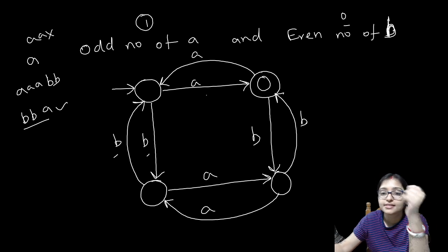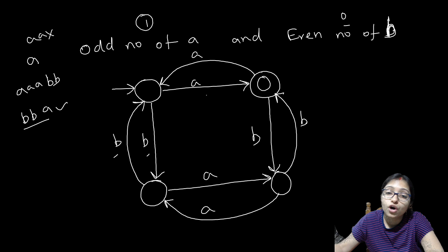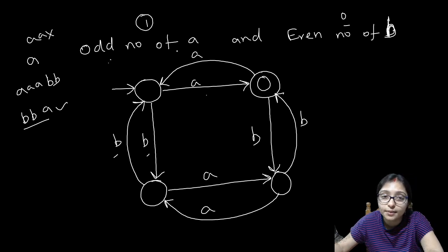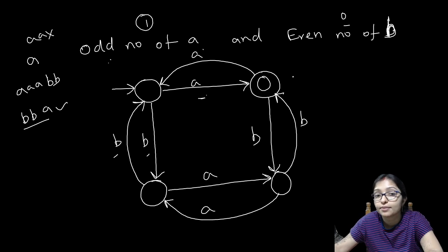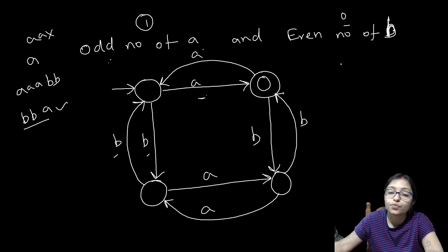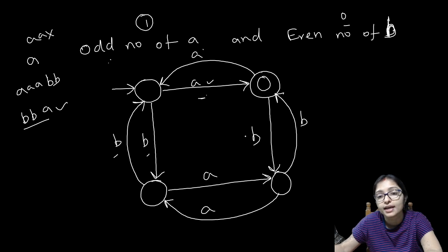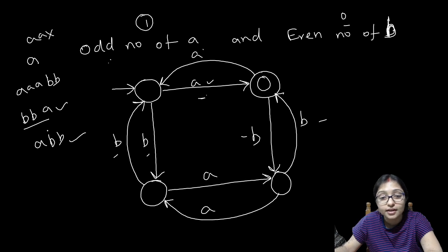So check that all the possibilities of odd number of A and even number of B will always be accepted. Even number of B — if you are coming to this state with ABB, because ABB is accepted, all such strings are covered.